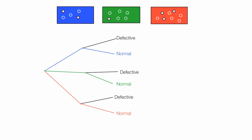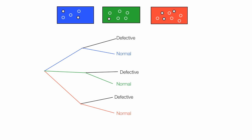Eventually I'll have the probabilities for picking a blue defective part, probability of a green defective part, and a probability of a red defective part. I can add these probabilities together to get the total probability. Then I'll show you how to calculate the probability of picking a normal part from the blue box, normal from the green, and normal from the red. Adding up these three probabilities will give us the probability of picking a normal part.